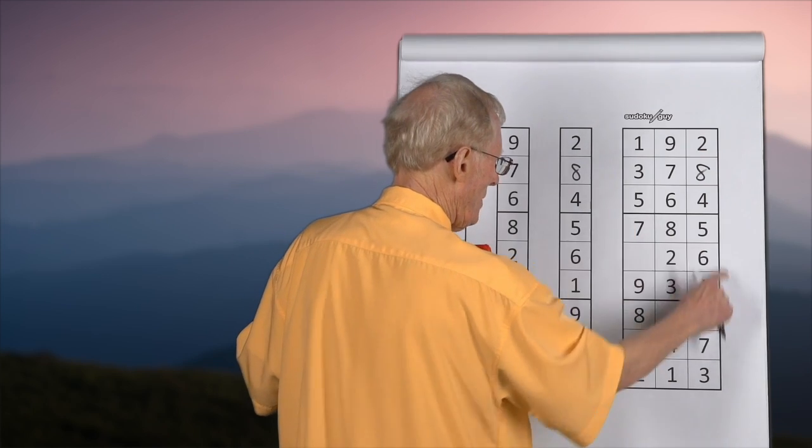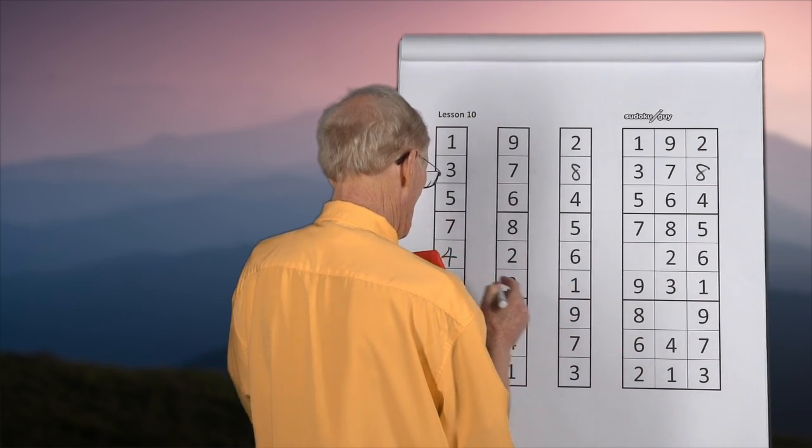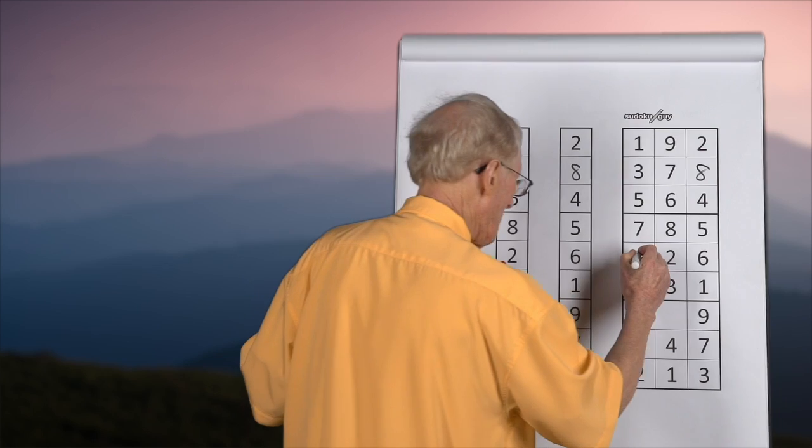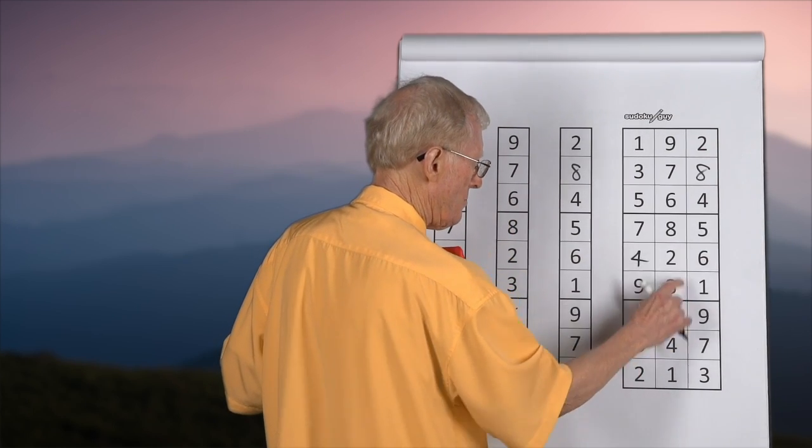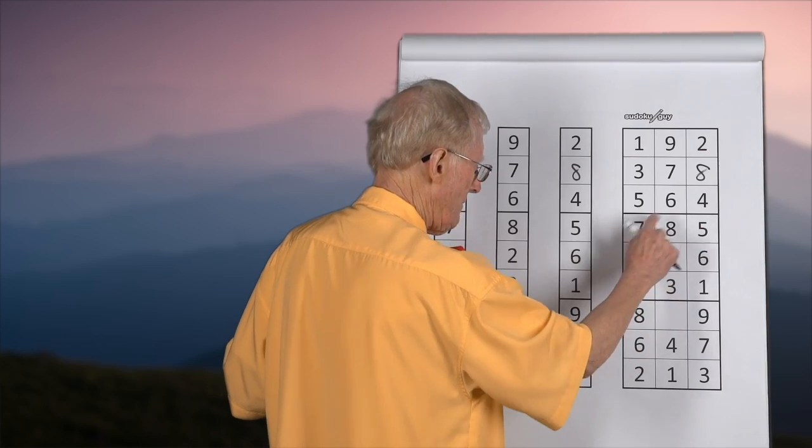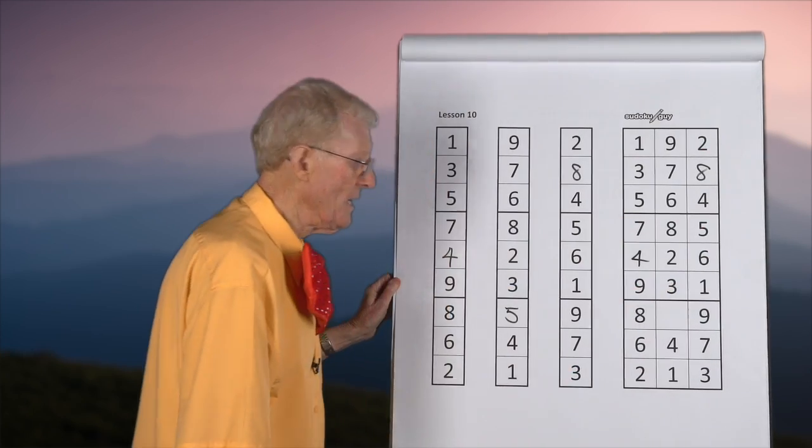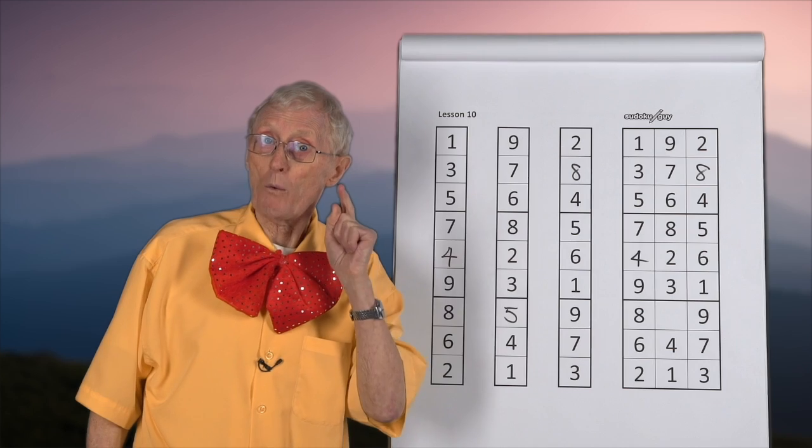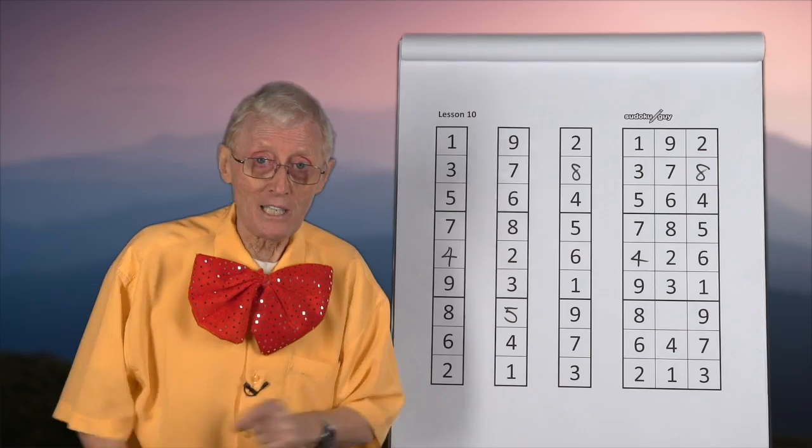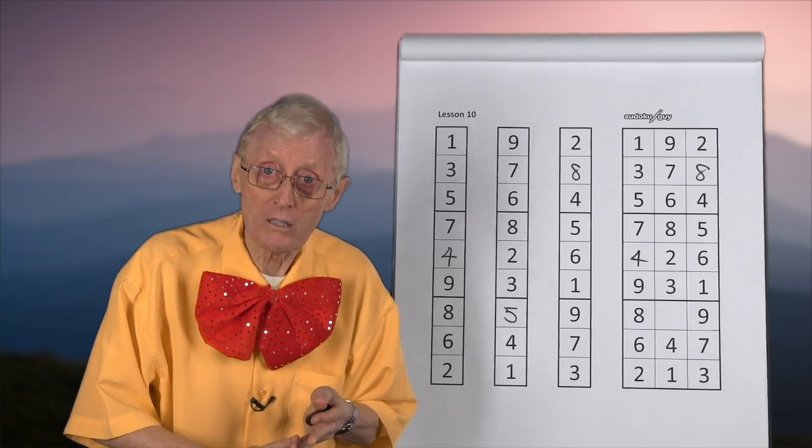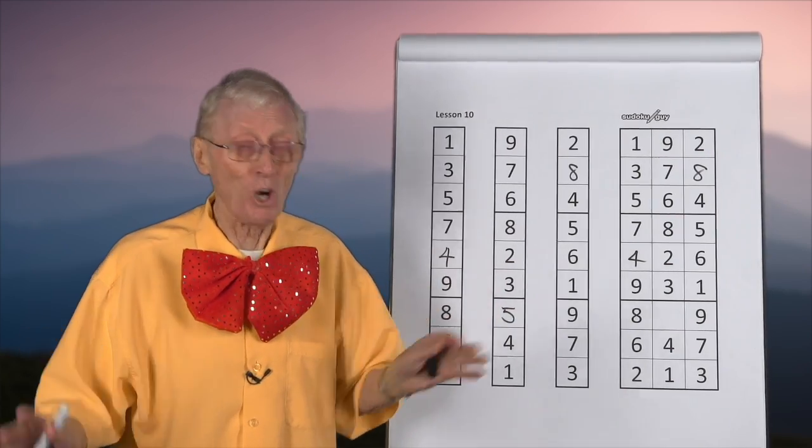If we join them all together, this block here will have, what did we solve? We solved a four here. And we can always check by going to this block here and going one, two, three, four, five, six, seven, eight, nine. Yes, it's all there. We're looking to make sure that we do not put a number in more than once in a row, column, or block. You can't do that in Sudoku.